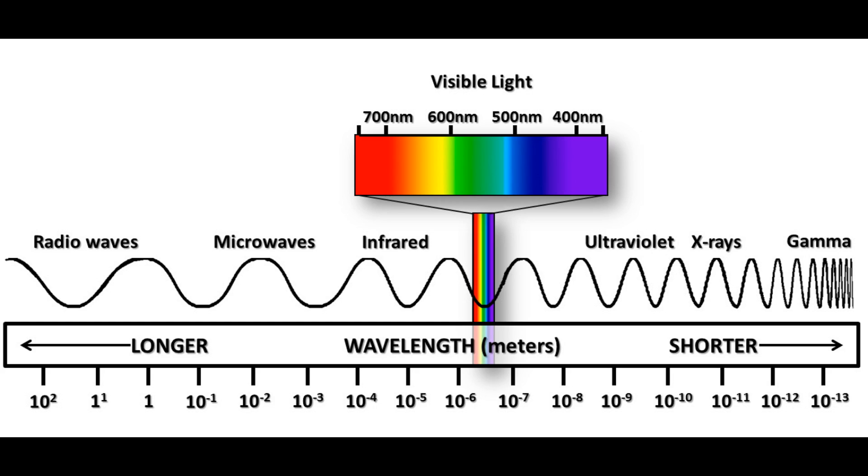Although we cannot see photons with wavelengths greater than 750 nm or less than 380 nm, we classify such wavelengths into categories based on their usefulness to humans. Photons with wavelengths shorter than 380 nm are classified as, from longest to shortest wavelength, ultraviolet, x-ray, and gamma ray. Similarly, photons with wavelengths longer than 750 nm are classified as, from longest to shortest wavelength, radio, microwave, and infrared.